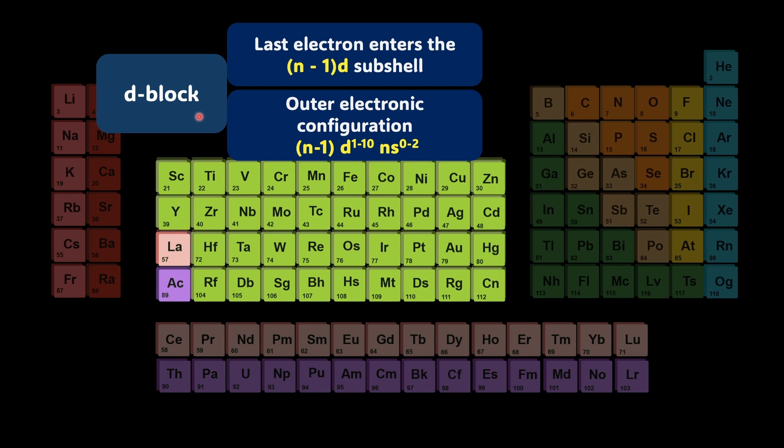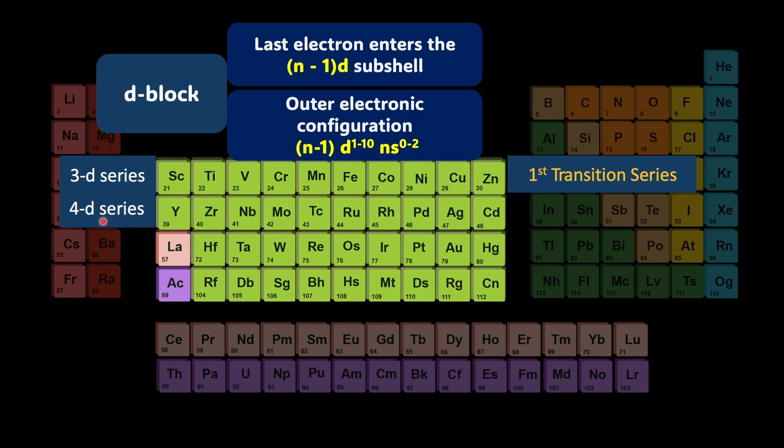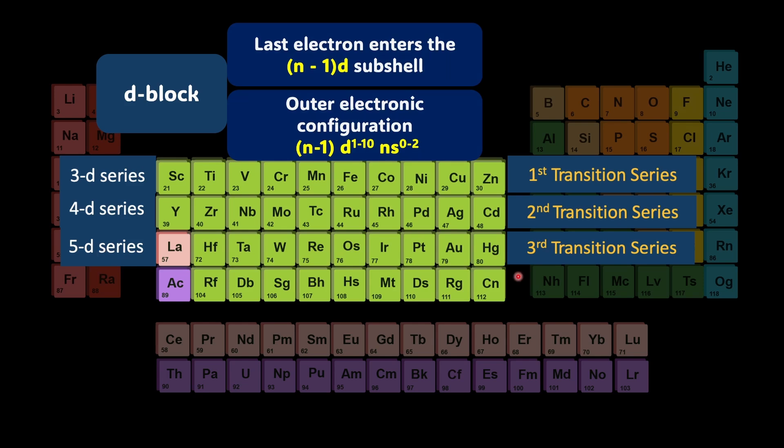These D block elements are called transition elements because the properties transition from going left to right. On left we have very reactive metals, on right highly reactive non-metals. We have four transition series. If the valence electron goes to 3d subshell it's first transition series. 4d is second transition series, 5d is third transition series, and 6d is fourth transition series.